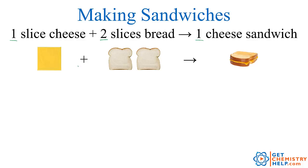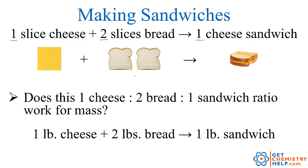Just as in a chemical reaction, the ratio is particles or pieces. Our particles could be molecules, our particles could be moles, or our particles could just be pieces of cheese and bread. So one slice of cheese reacts with two slices of bread to make one cheese sandwich. Does that same ratio work for mass? Could I say for every one pound of cheese it reacts with two pounds of bread to make one pound of sandwiches? Well of course not. The stoichiometric ratio is always pieces or particles, not mass.